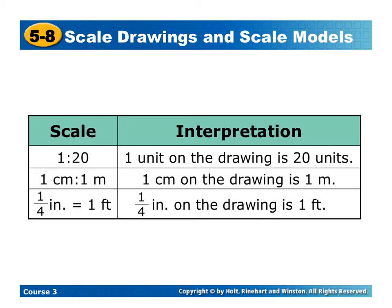So for example, you might see different scales that look like this: 1 to 20, 1 centimeter is to 1 meter, 1 fourth of an inch is to a foot. When it's 1 to 20 and there's no units, it means it's written with the same unit. So 1 unit on the drawing is 20 units on the actual object. Here, 1 centimeter to 1 meter means every centimeter on the drawing is equal to 1 meter on the object. And 1 fourth inch to 1 foot means every quarter of an inch on the drawing is actually equivalent to a foot in real life.